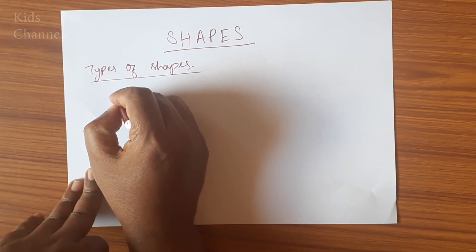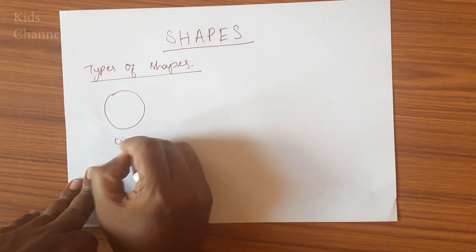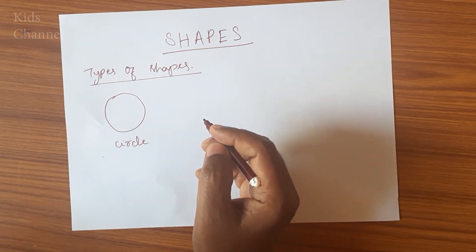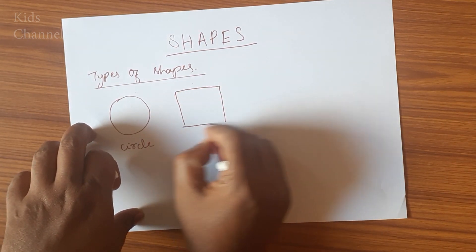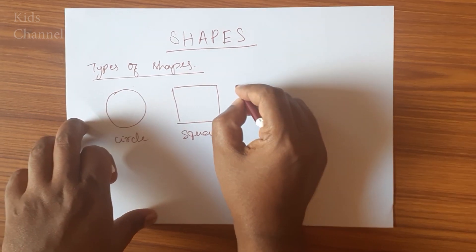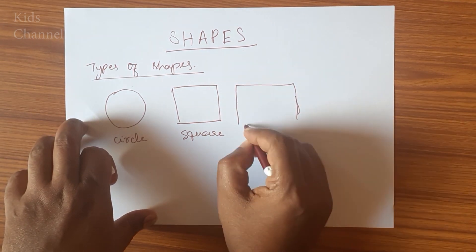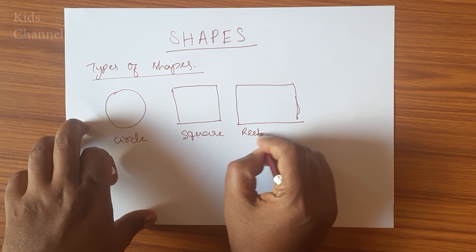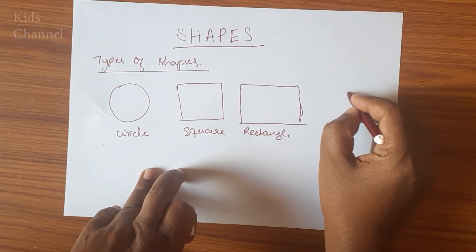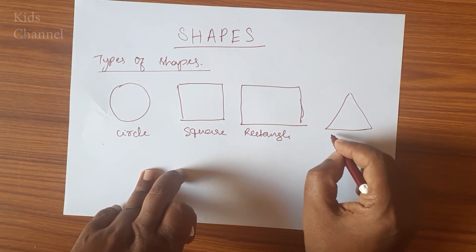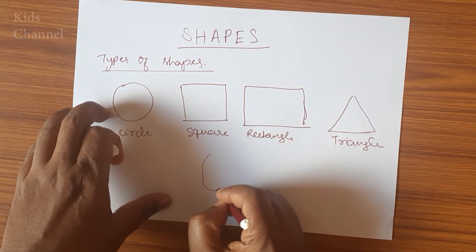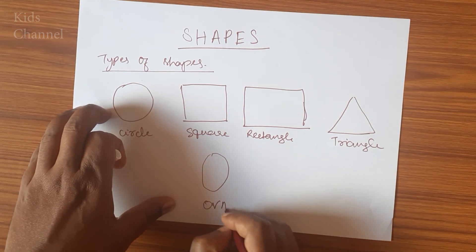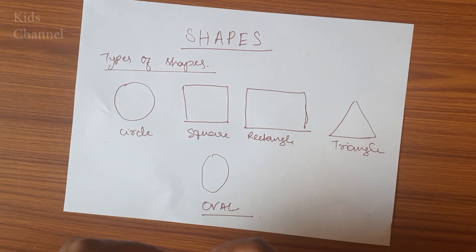The first one is circle. This is square. This is rectangle. This is triangle. And this is oval. These are the basic types of shapes. First, we will learn what you mean by circle.